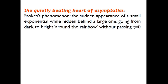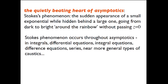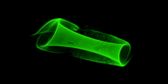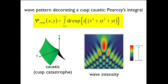And then he did beautiful numerical calculations which showed directly that you really need this phenomenon to happen. He looked on both sides and did that. I wish I had time to describe his calculations, which I've reproduced, but I don't. Now, this is the quietly beating heart of asymptotics. It's the Stokes phenomenon, the sudden appearance of a small exponential while hidden behind a large one going from dark to bright without passing through zero. Now, it occurs throughout asymptotics in integrals, differential equations, integral equations, difference equations, series, near more general types of caustics.